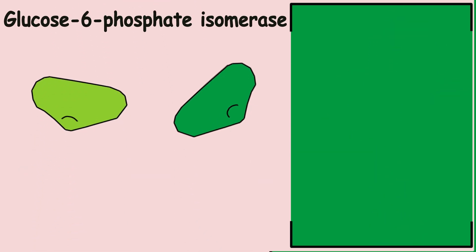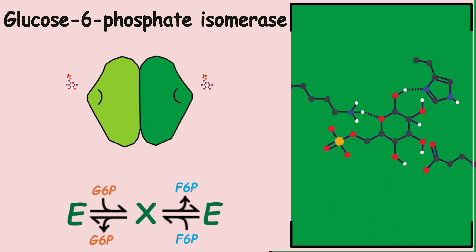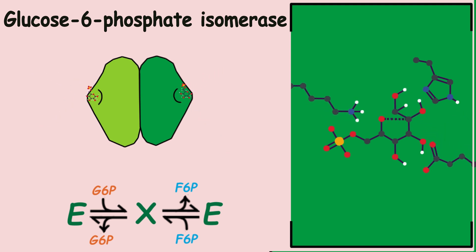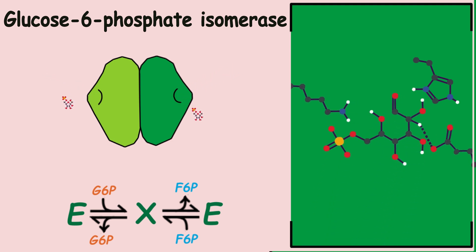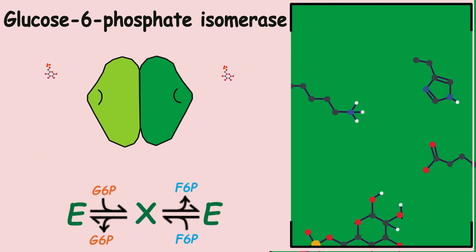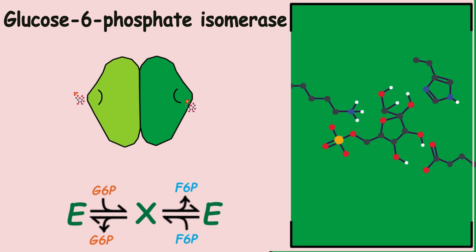The second reaction of glycolysis is carried out by glucose-6-phosphate isomerase. Two of them bind together to form a dimer. The reaction opens the glucose ring and changes it from hexagonal to pentagonal, converting it to fructose-6-phosphate and vice versa. The enzymatic reaction is reversible and flows in both directions depending on the concentration of its metabolites.